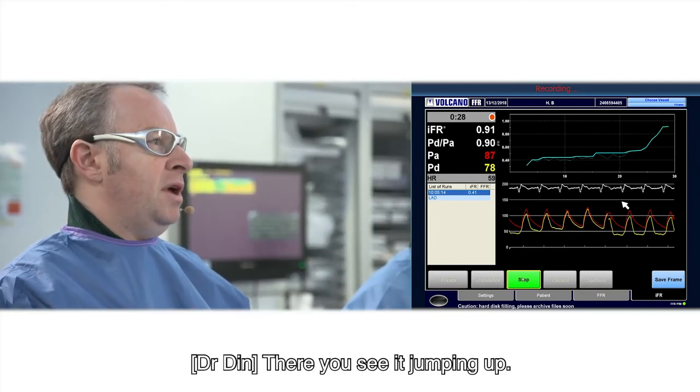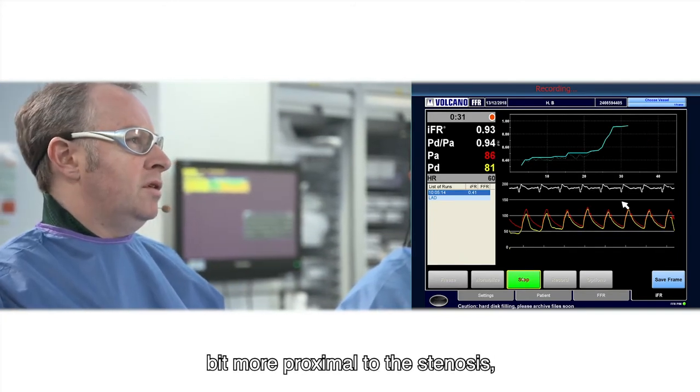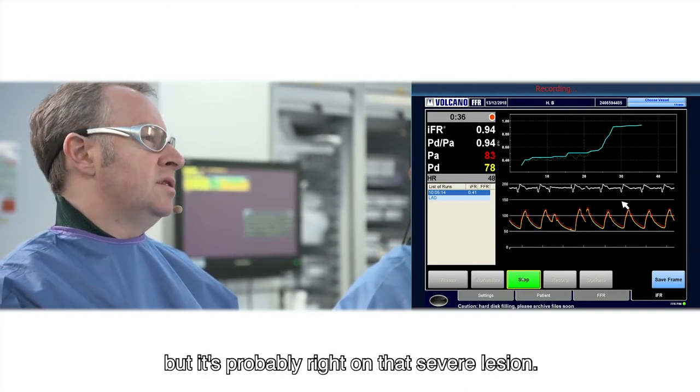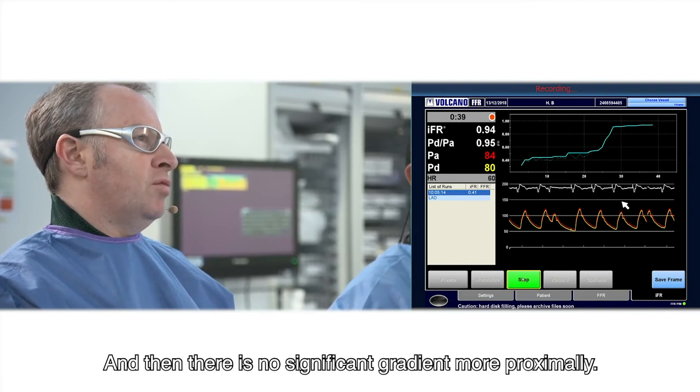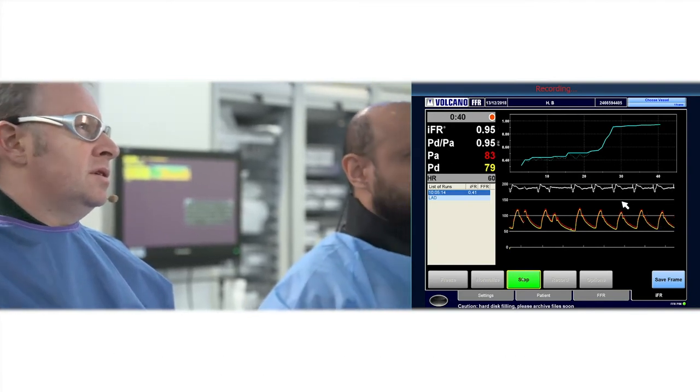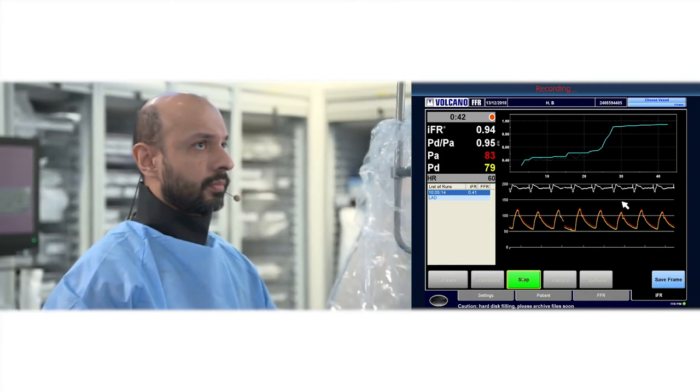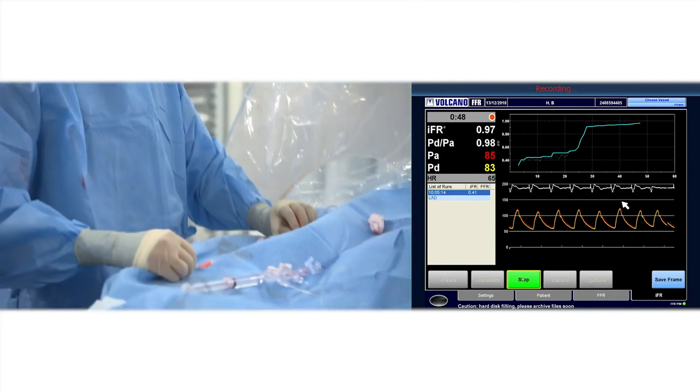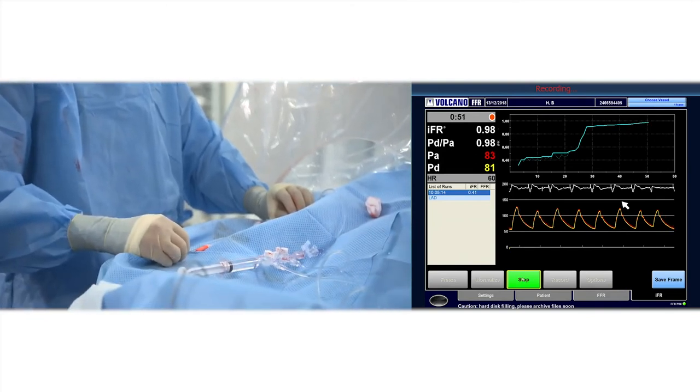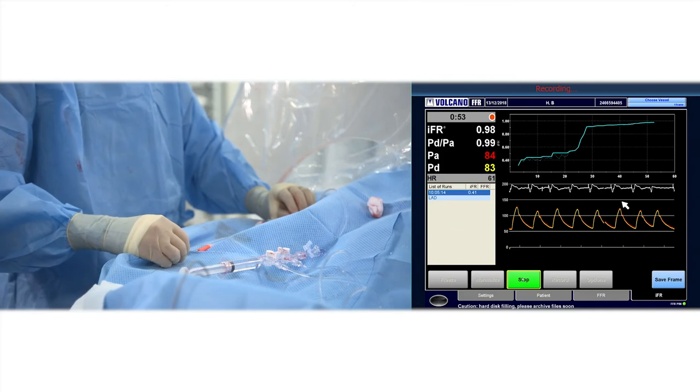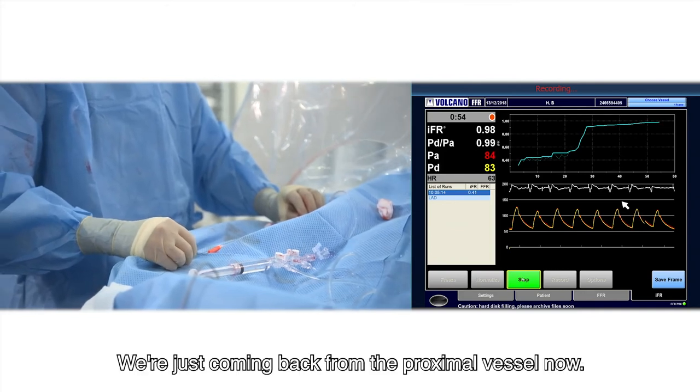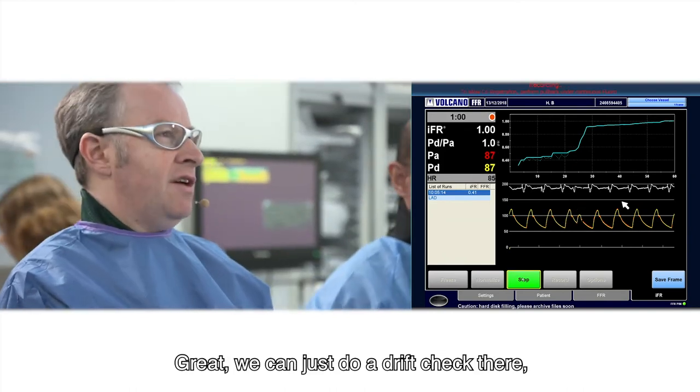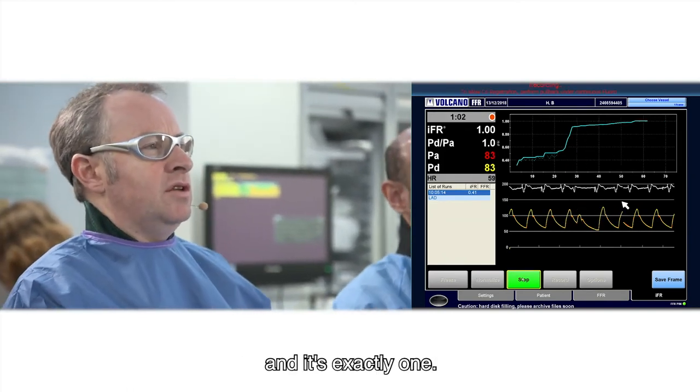There you see it jumping up. A big jump up there, which actually is a little bit more proximal to the stenosis, but it's probably right on that severe lesion. And then there's no significant gradient more proximally. We're just coming back to the proximal vessel now. Great, we can just do a drift check there, and it's exactly one. So we're very happy with that.